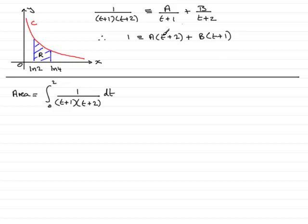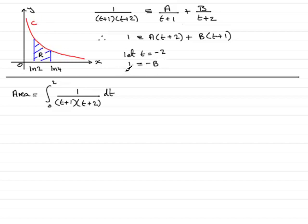To find constants A and B, we substitute particular values of t that make each bracket equal to zero. Letting t = -2 eliminates the A term, giving 1 = B(-2+1) = -B, so B = -1.